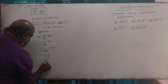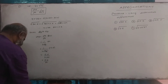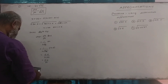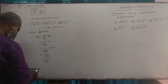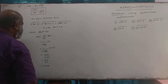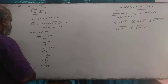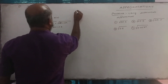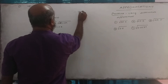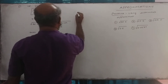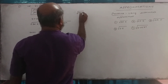This equals 0.6 divided by 12, giving a difference of 0.05. Therefore, y, which is the same as root of 36.6, is approximately 6 plus 0.05, equal to 6.05.